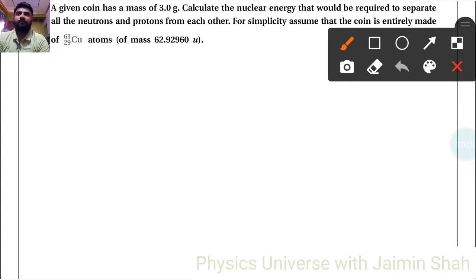A given coin has a mass of 3 grams, so m equals 3×10^-3 kilograms. Calculate the nuclear energy that would be required to separate all neutrons and protons from each other. For simplicity, assume that the coin is entirely made up of copper and mass of copper is given. So first of all...